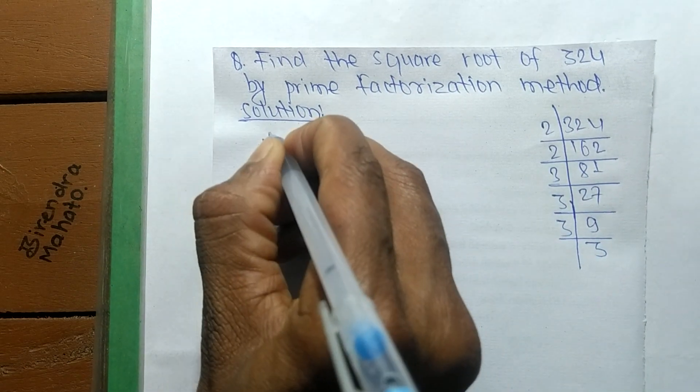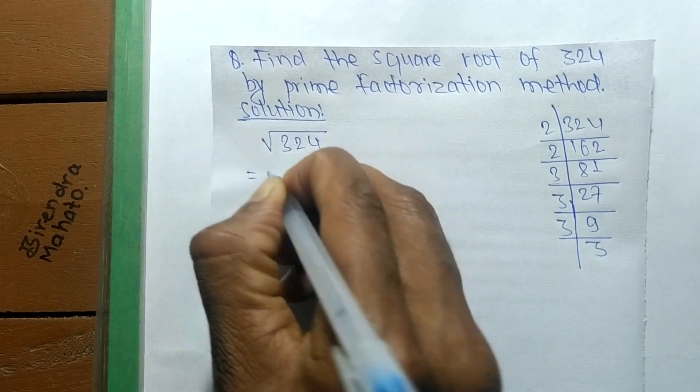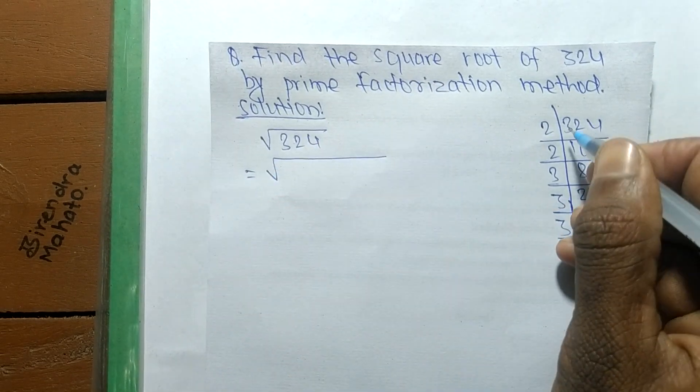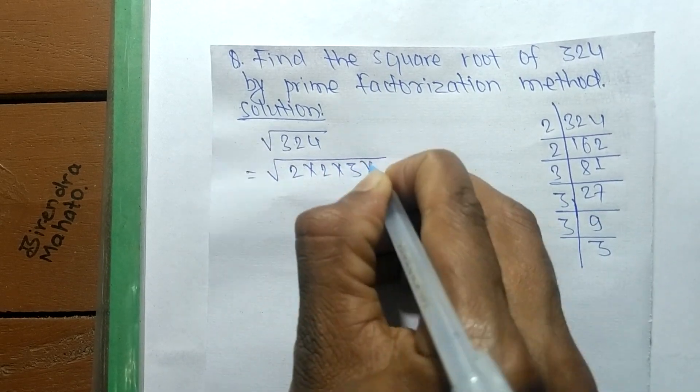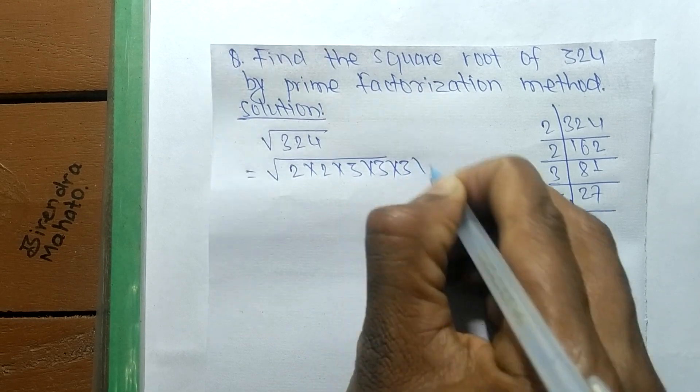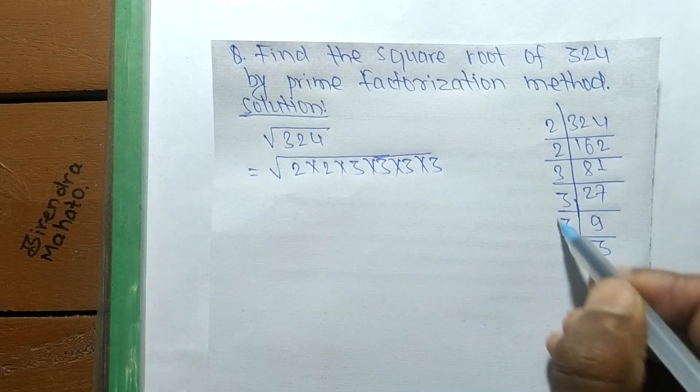we find the square root of 324. From the prime factors, we can write 2 × 2 and 3 × 3 × 3 × 3. Now we have written all the prime factors of 324.